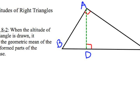This altitude, which we're going to call AD, is drawn from the right angle down to the hypotenuse, creating another right angle. So AD is the altitude.